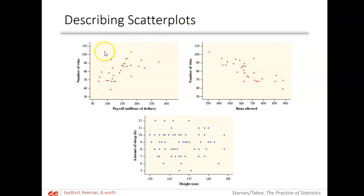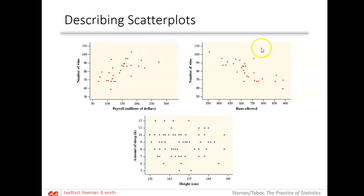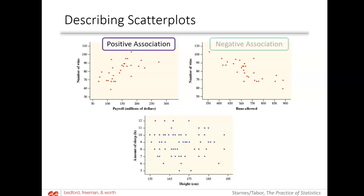What a lot of people do is draw an oval around the dots and squint. You can notice that one scatter plot has a positive association, another has a negative association, and one is just a blob with no direction whatsoever — that would be no association. Positive, negative, no.